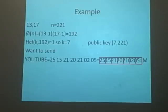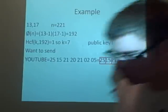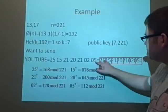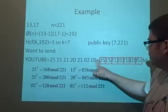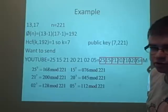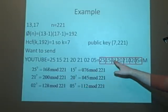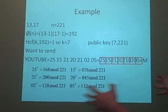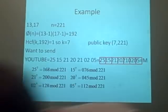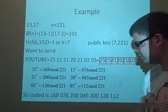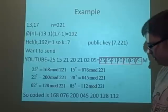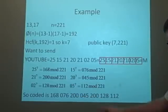Now what we have to do is we have to raise them to the power k, so 25 to the power k modulo 221, this gives us the value 168. 15 to the 7 is 76, and so on. I've only done 21 once because we've used it twice, so you don't need to. And we put that together, these are our new values, we send each of those to the person that you want to decode the message. So we send them 168, then we send them 076, then we send them 200, then 045, 200 again, 128, 112.